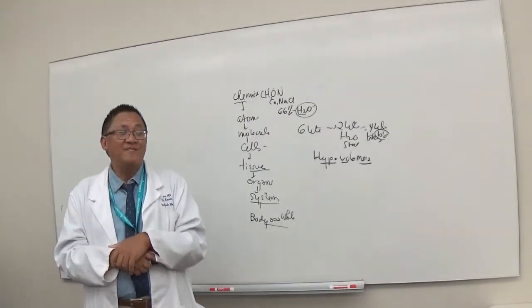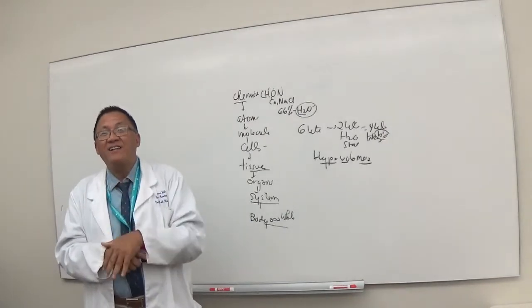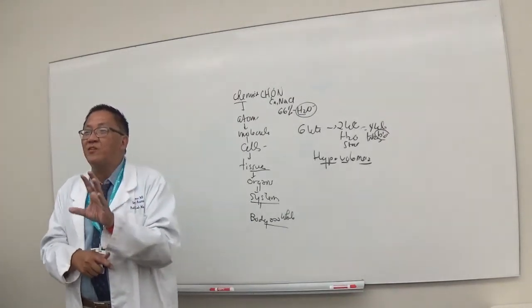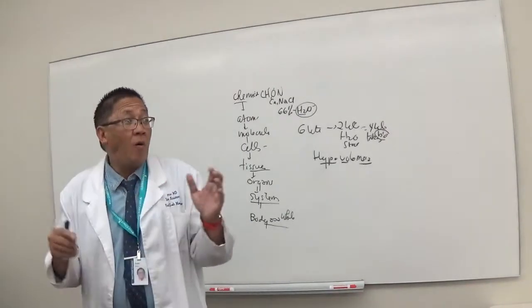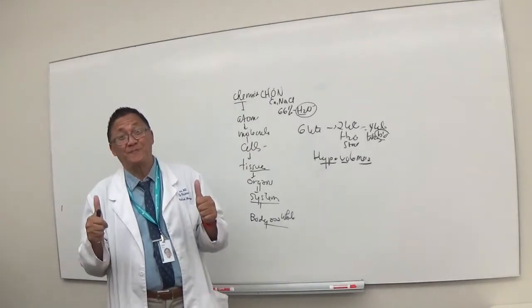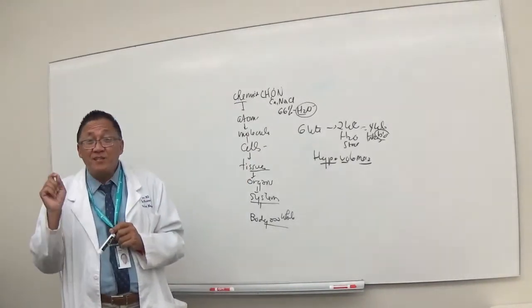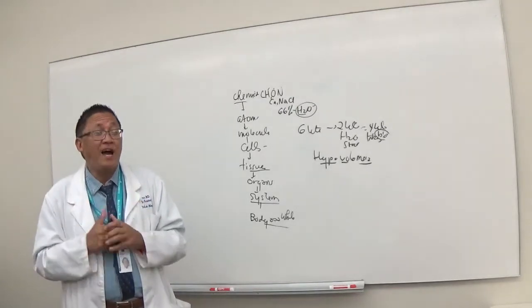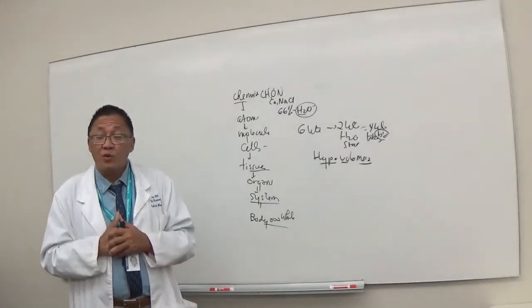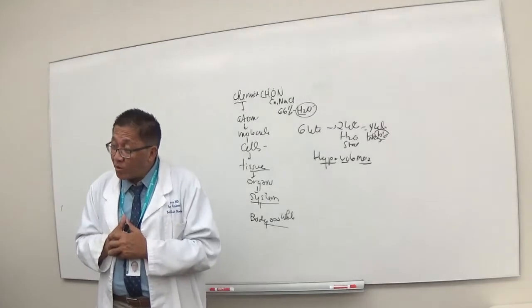Seafood. The thyroid gland, it needs seafood. What does the seafood contain? Iodine. To produce thyroid hormones. Yes, you do.